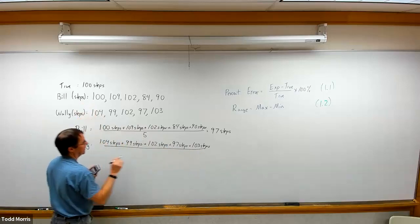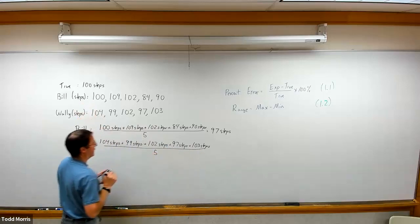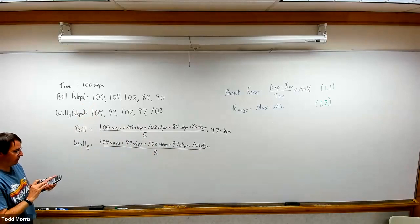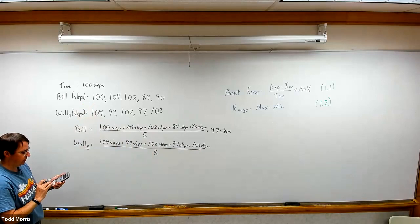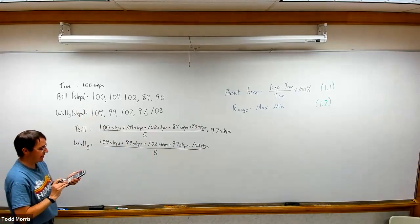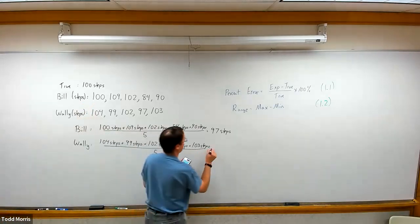The sum of individual measurements divided once again by number of observations. Like with Bill, Wally did this five times, so divide our total here by five. We have 104 plus 99 plus 102 plus 97 plus 103, divide by five, gives us 101 steps.